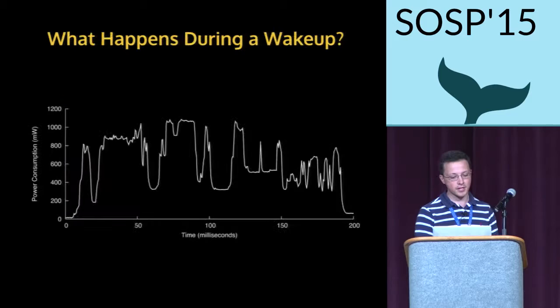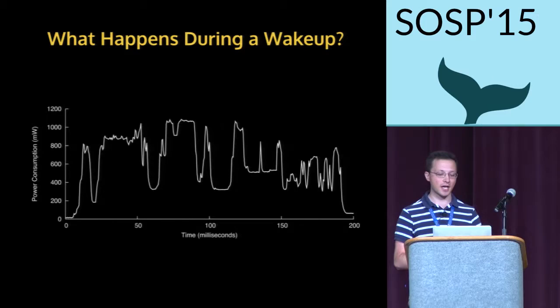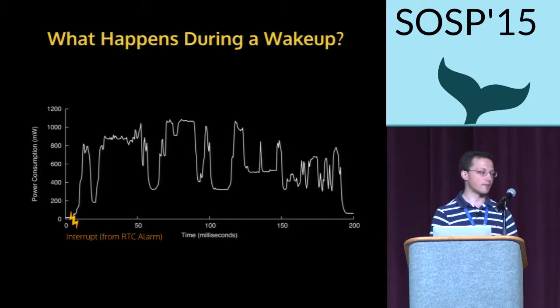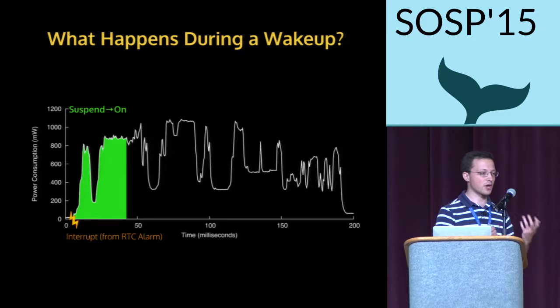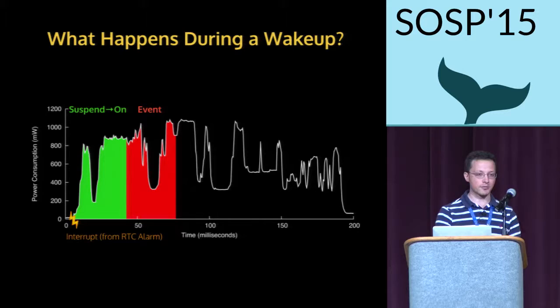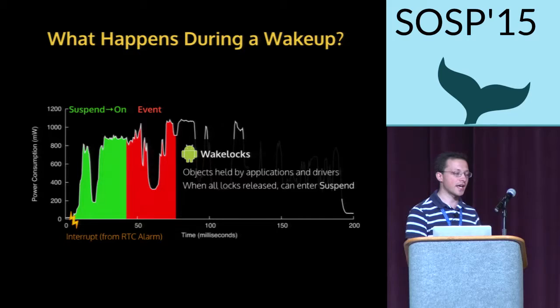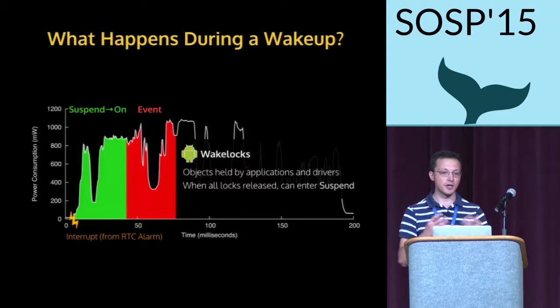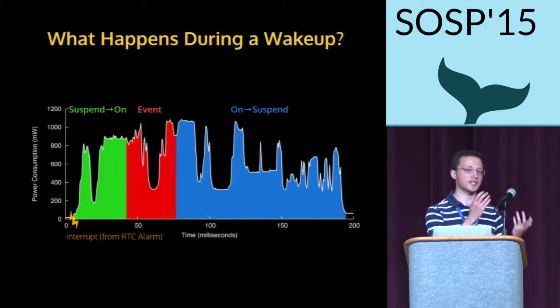Let's zoom in to look at what's going on in the event itself. The y-axis remains the same while the x-axis is now measured in milliseconds. At the beginning of a wake-up event, we first have an interrupt from a hardware device — in this case the real-time clock or RTC alarm. Then the kernel begins resuming the system from a suspended state into the on state. Once done, the system runs the event — again, pulling data from a remote server over Wi-Fi. After the event completes, Android's notion of wake locks — objects held by applications and device drivers — keeps the system in the on state until all are released, at which point the system transitions safely back into suspend.